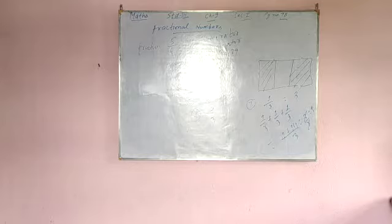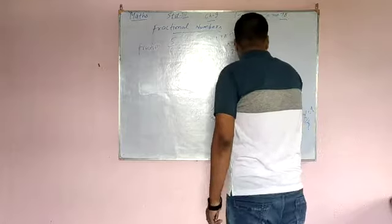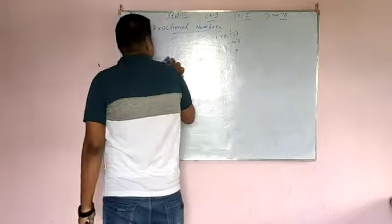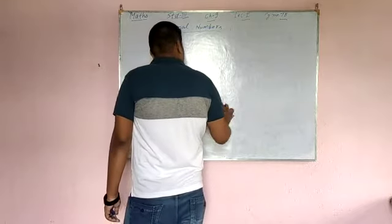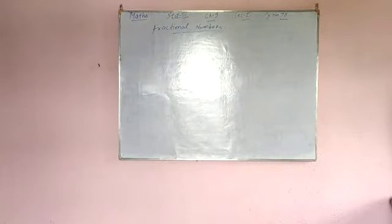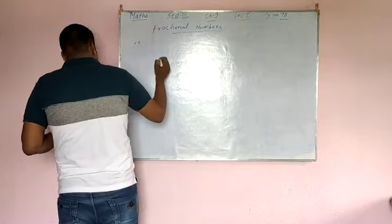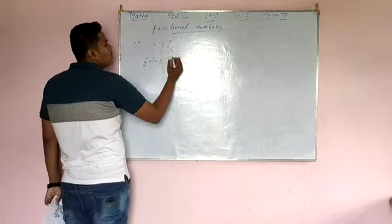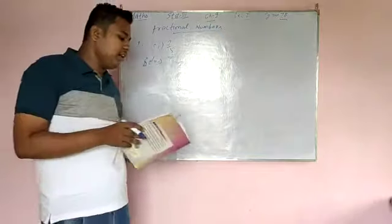Question number 11: read the following fractional numbers. So for example, 2 by 5 — you will simply write the answer as 2 by 5. Very easy. You can write 2 by 5.